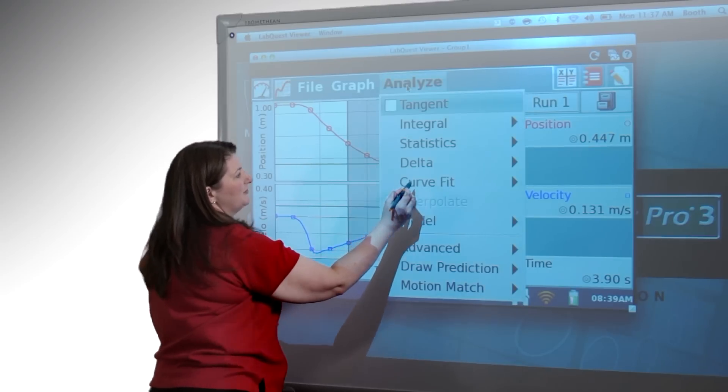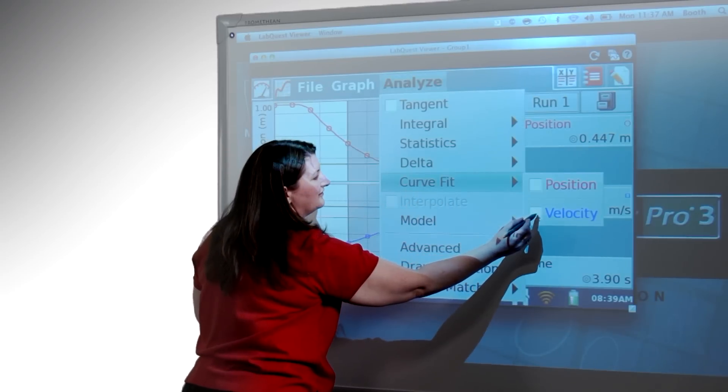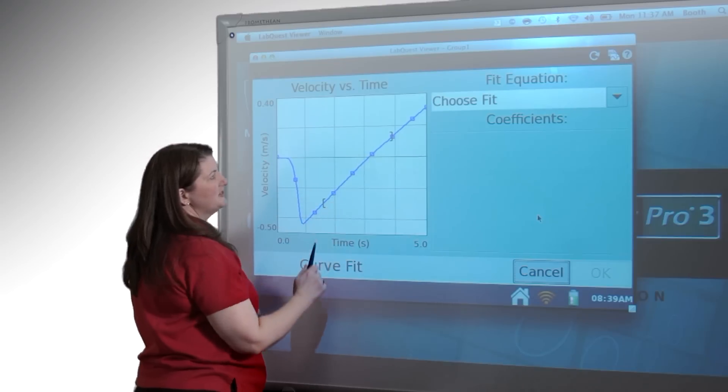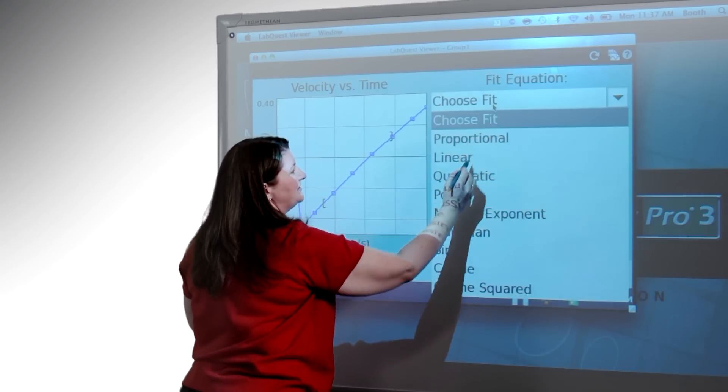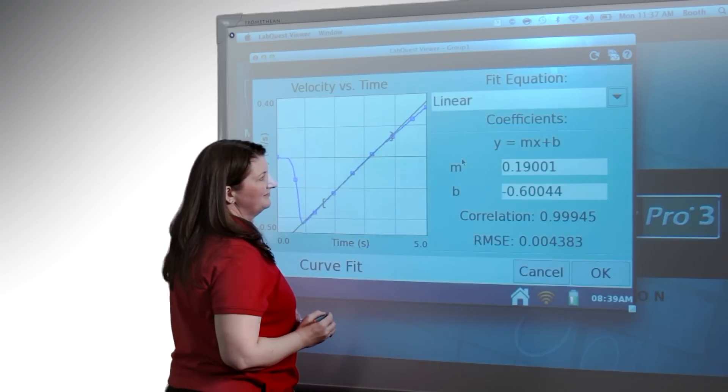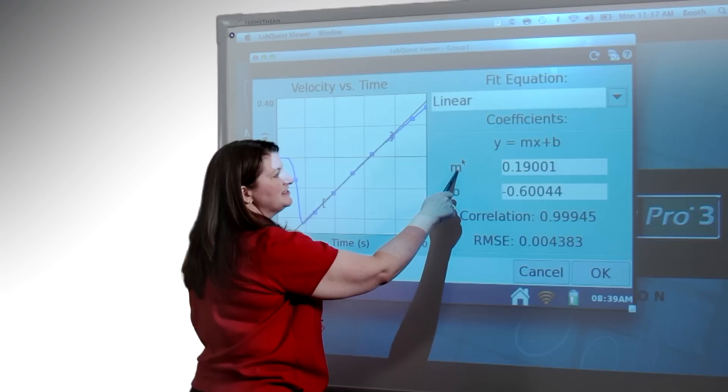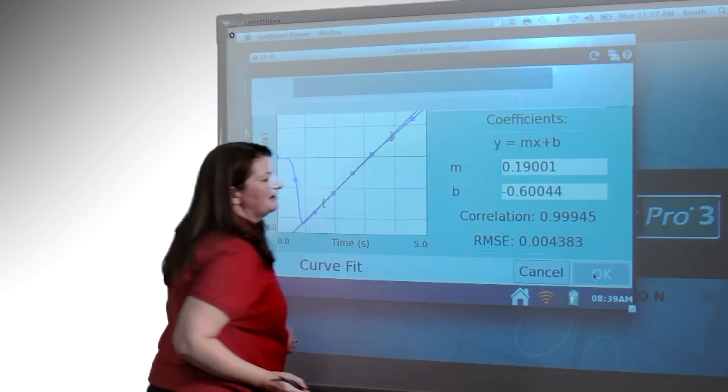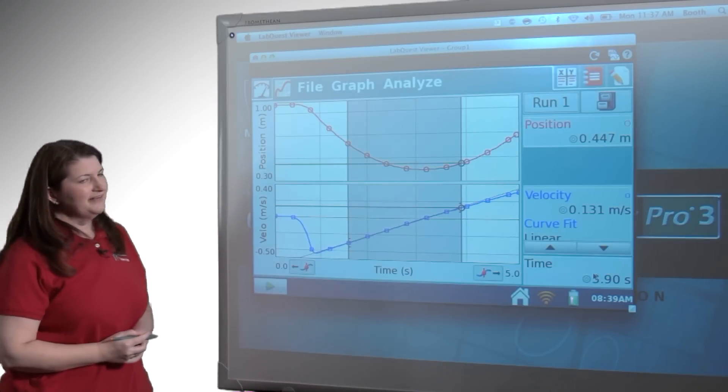Under the analyze menu, I'm going to do a curve fit on the velocity graph. Here's our data with my selection indicated. I'll choose a fit. We'll do linear. And now here's our statistics. So the M is the slope of the line. 0.19 meters per second squared is the acceleration of our cart on the ramp. And I'll say OK. And it plots our data for us.